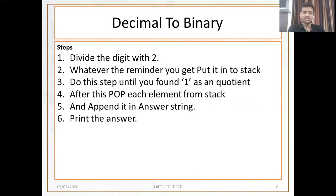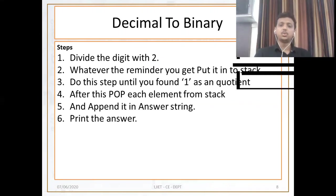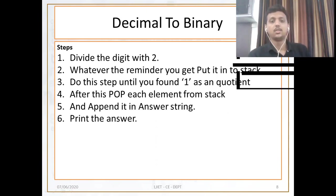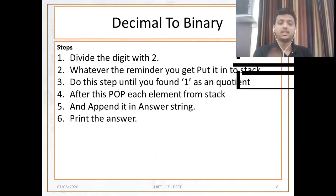Print the answer. It is very easy to convert our decimal number into binary. First divide your decimal number by 2, then whatever remainder you get, put that remainder inside the stack. Then repeat this step until you get 1 as a quotient. Then pop each and every element from the stack and append it with the final output string.